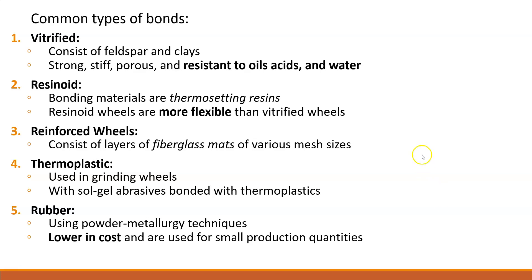There are at least five types of bonds. The vitrified bond is good for resistance to oils and acids, so it works well in hostile environments. Resinoid is more for flexibility and toughness. You also have reinforced, thermoplastic, and rubber bonds, which are selected based on cost. Most things in manufacturing allow you to select the bond based on your application, cost, environment, and the magnitude of the job — large production versus a small one-of-a-kind custom job.